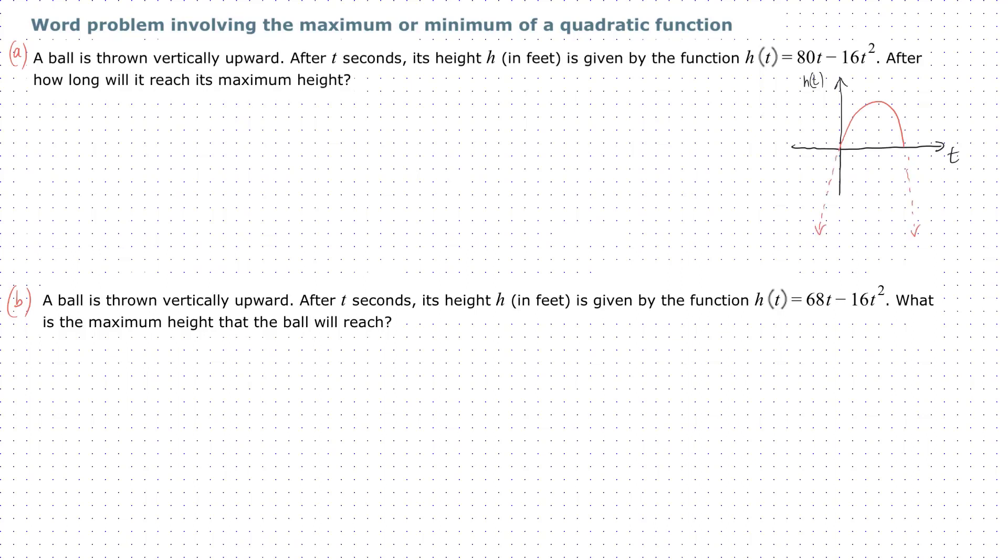We want to find how long it takes to reach its maximum height. So if we take this vertex and drop it down, we're trying to find this right here—some t value that lies on the t-axis. We're really finding time.